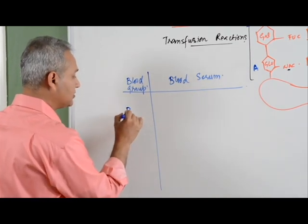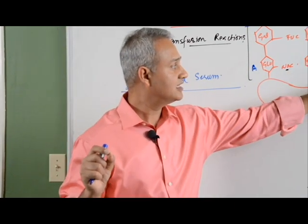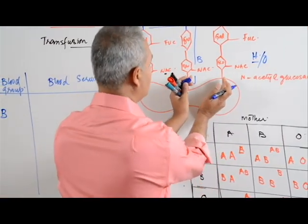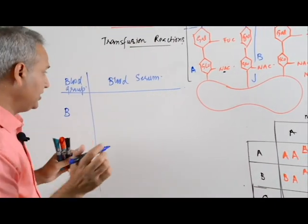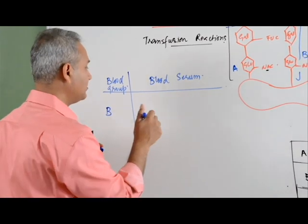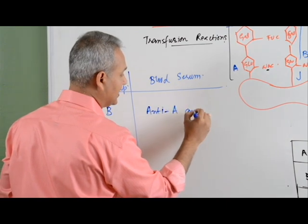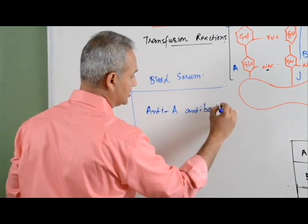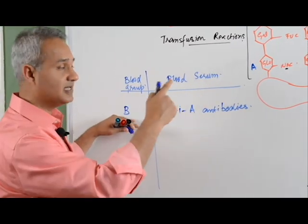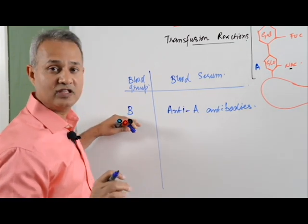Blood group B means the RBCs have either BO antigens — the H antigen is called O — so either BO, or two B's. That is what blood group B is. Now, what is in my serum? My serum has anti-A antibodies. This is very interesting — why do I not have anti-B antibodies? Because I have B as a self antigen; my immune system has been trained to ignore B as an antigen. I will not make antibodies against my own B antigen.